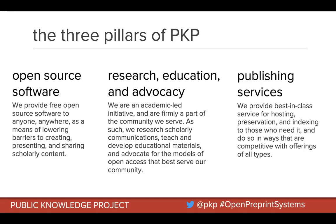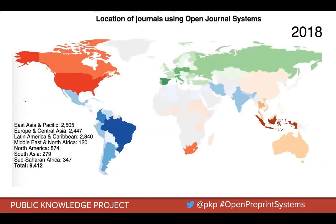We do research on scholarly communications through the Scholarly Communications Lab, develop educational materials through PKP School around journal publishing, and do advocacy for open access and open science practices. The third pillar is publishing services — we provide hosting, preservation, and indexing, some free and some as a cost-recovery commercial offering. We're a global initiative with Open Journal Systems journals on every continent, with particularly strong presence in Indonesia and Brazil.